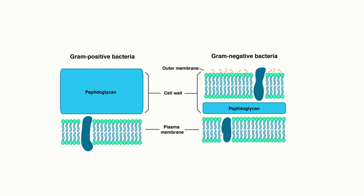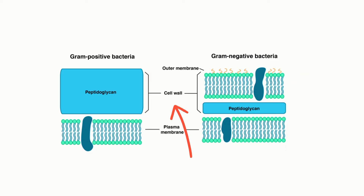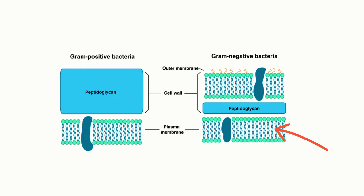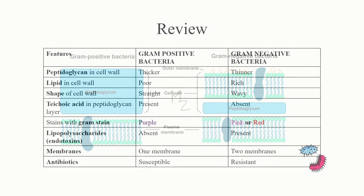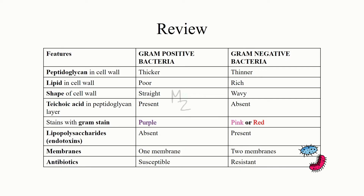Looking at this diagram: this is the thick peptidoglycan layer of the gram positive, and this is the thin peptidoglycan layer of the gram negative — these are their cell walls. Gram positive has a single plasma membrane, while gram negative has two membranes: plasma membrane number one and the outer membrane number two.